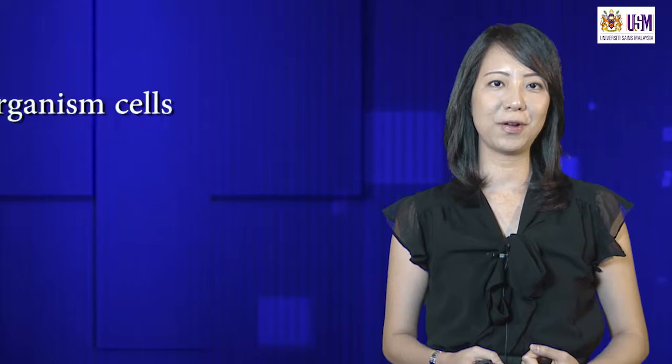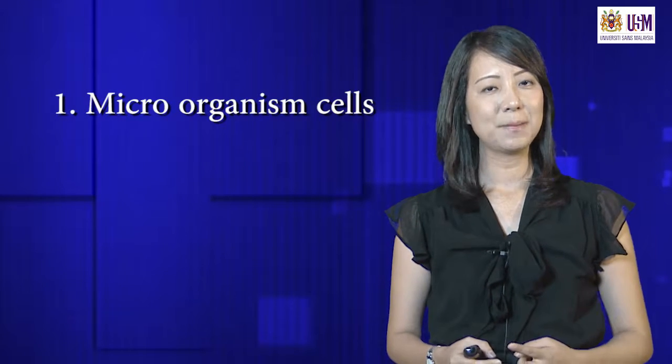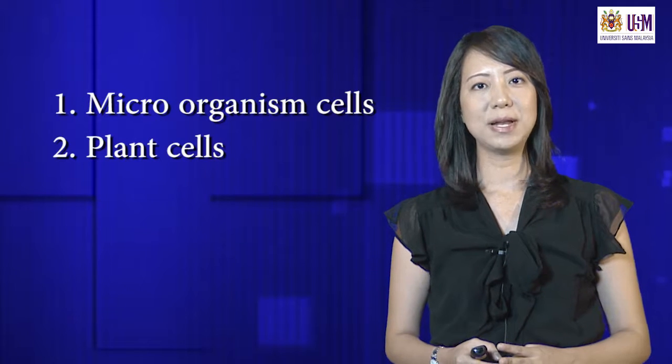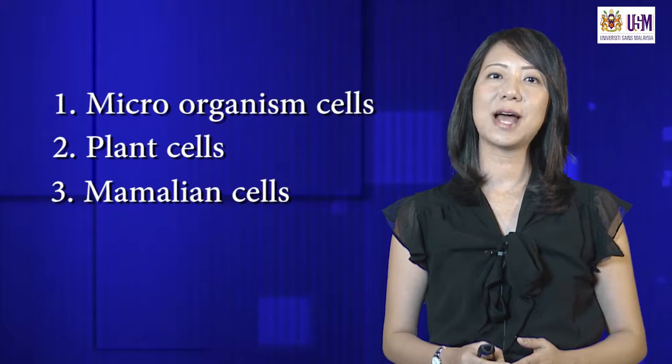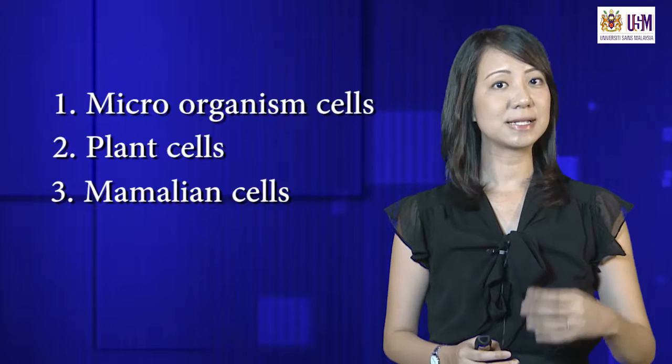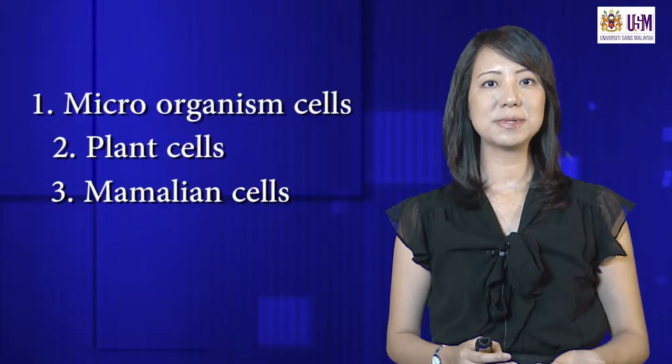Now let's look at some examples. What are the different origins of cells that we could use in bioprocessing? There are several different types, and throughout the whole lecture I will be emphasizing on three types. The first will be microorganism cells, secondly plant cells, and finally mammalian cells. All these different types of cells can be used as themselves, or we could use their metabolites.